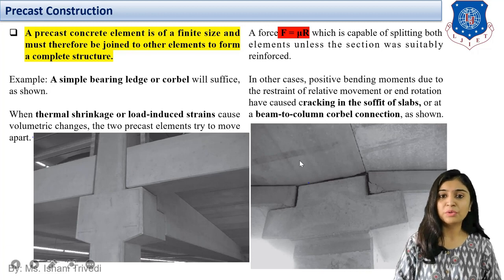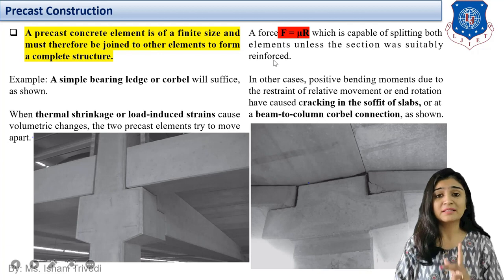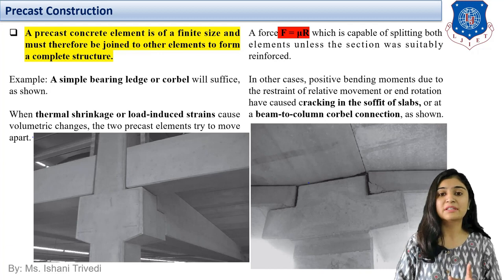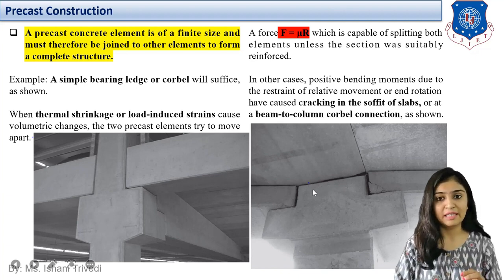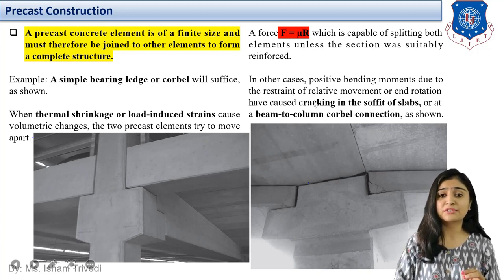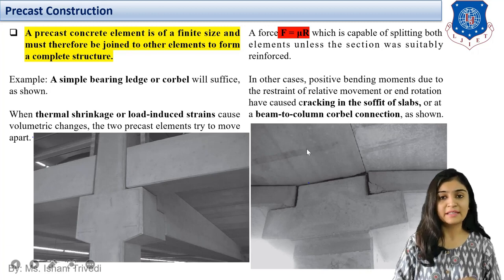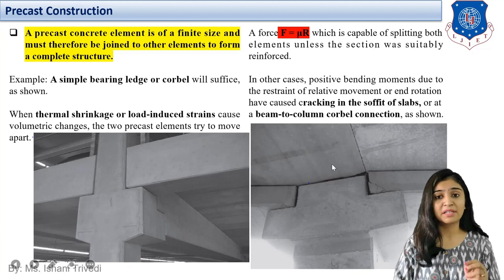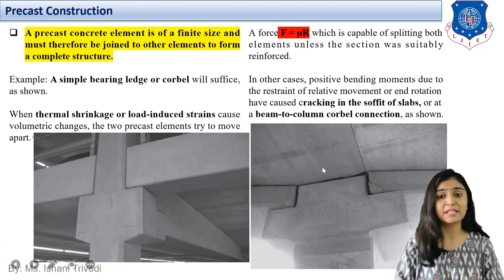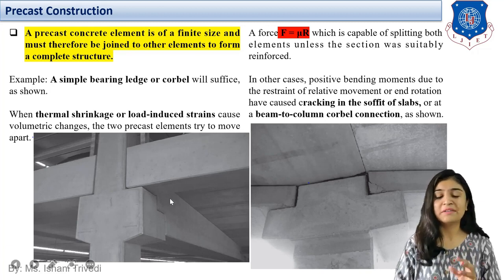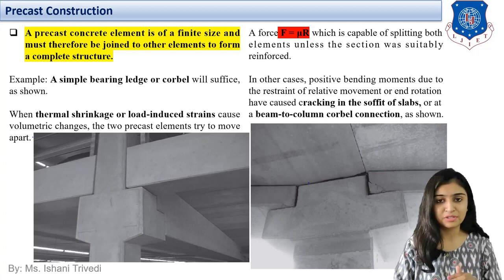A force of F equal to μR is capable of splitting both elements unless the section was suitably reinforced. The problem is: if the precast section is not reinforced — if it is not RCC or suitable reinforcement is not provided during design — then this amount of force is enough to break apart or move apart the structural elements. In other cases, positive bending moments due to restraint of relative movement also occur. End rotation can also cause cracking in the soffit of the slab or beam-to-column corbel connection. These problems arise if the precast member is not suitably designed for shrinkage or load-induced strains.